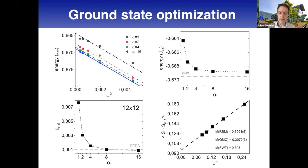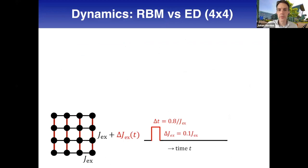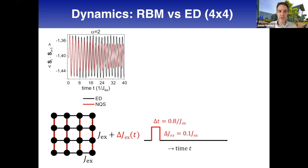We have ground state optimization well under control, so let's try some dynamics. Because there's not much you can do exactly for the two-dimensional Heisenberg model, we started by comparing with exact diagonalization on a simple 4x4 system. As a first step we looked at nearest neighbor spin correlation - the black line is exact diagonalization and the red line is neural quantum states results. For short times we get accurate agreement with exact diagonalization, but at later times there's some dephasing and dissipation.